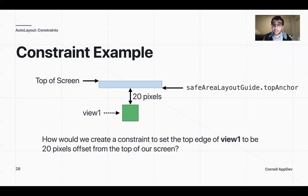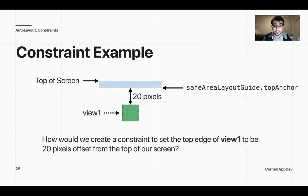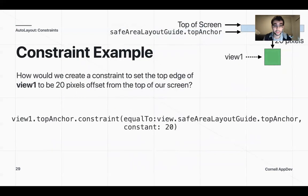Now let's say we want to do it off the top of the screen. Keep in mind we want to use safe area layout guide so we don't have issues with extra widgets that might be in the way. We'll do view 1 dot top anchor, constrain it to view dot safe area layout guide dot top anchor, then offset it by 20.